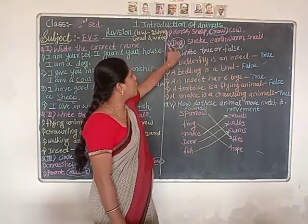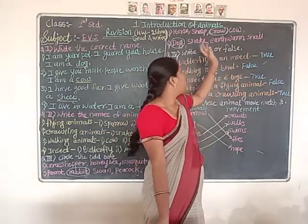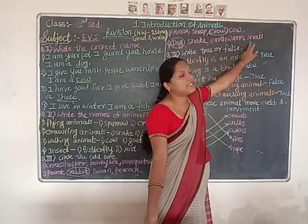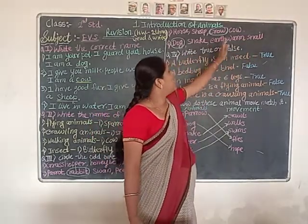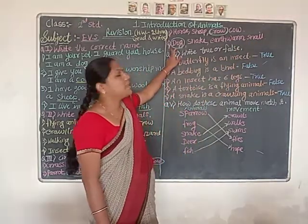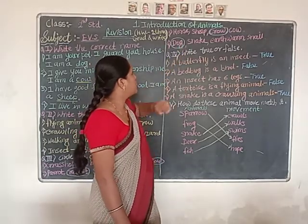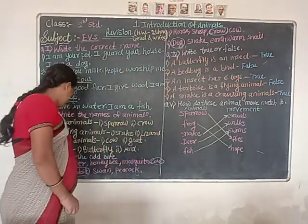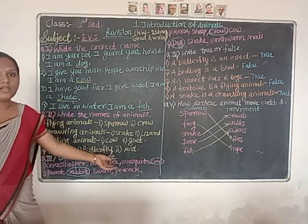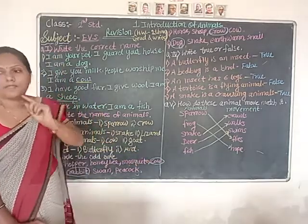Next odd one: dog, snake, and earthworm. Snake and earthworm are crawling animals, and dog is a domestic animal. So circle the dog. Remember — three of them are the same type and dog is different, so you circle the different one.